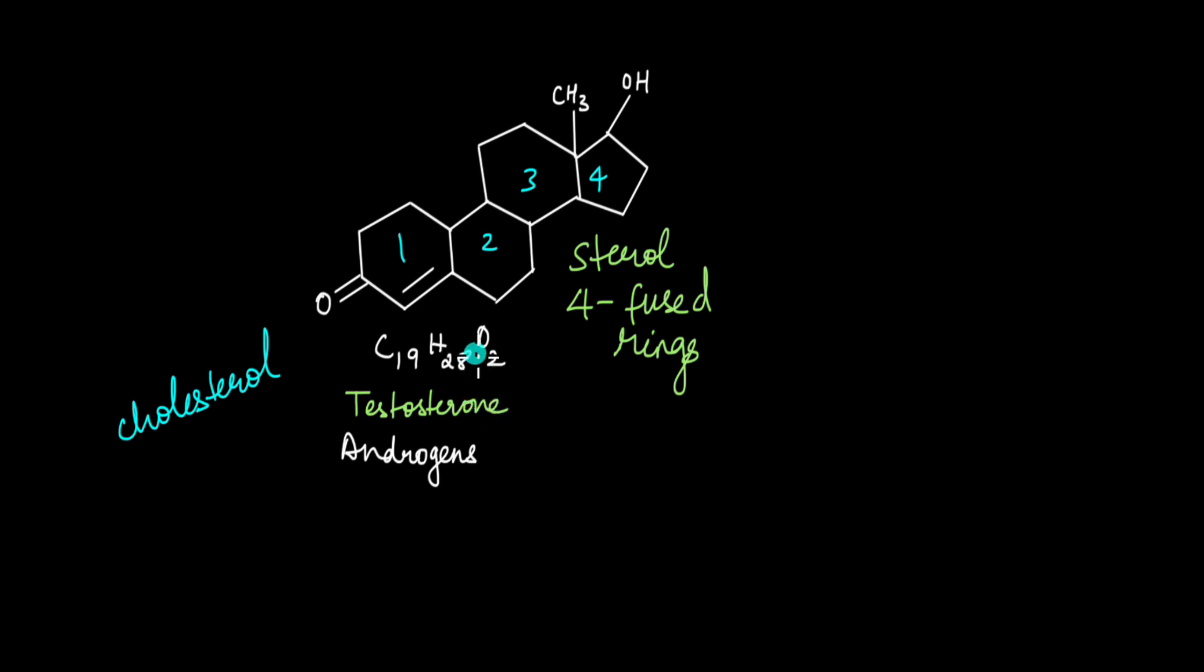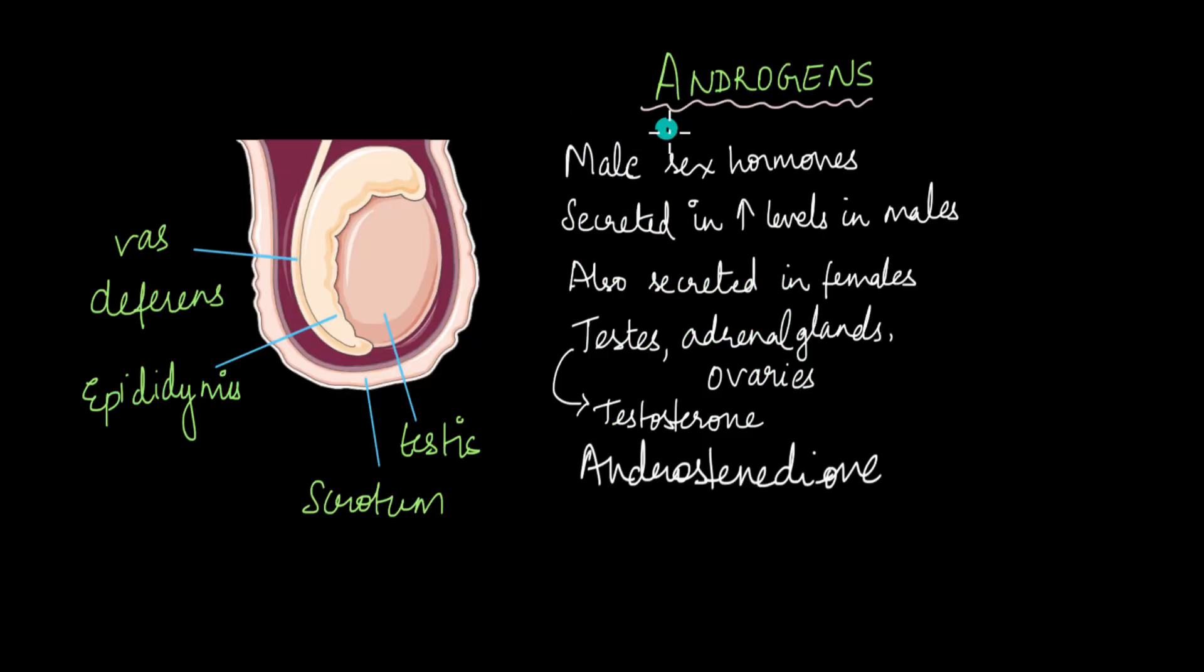There are other androgens as well. I'll talk about that in just a while. So where are these androgens produced in males? Androgens are the male sex hormones that are secreted primarily in the testes. Now the testes is the structure that is located inside the scrotum. This is the testes and this is the epididymis and this is the vas deferens. So testosterone is majorly secreted by the testes.